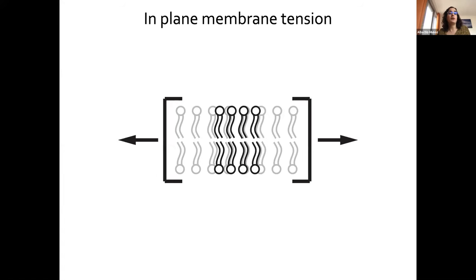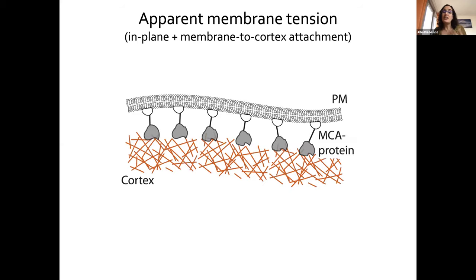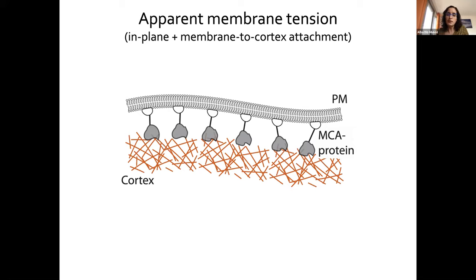What do I mean by membrane tension? In a pure lipid system it's the energy required to expand the surface area in the plane of the bilayer — basically, the lipid molecules don't want water to come in. In cells, things are more complicated because the plasma membrane tightly interacts with an underlying actomyosin cortex through membrane-to-cortex attachment proteins. This attachment also provides resistance to area expansion, so in cells we talk about apparent membrane tension, which is the sum of in-plane tension and membrane-to-cortex attachment. Today I want to tell you a story about this second component.